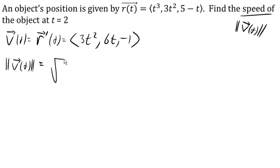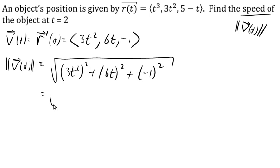Okay, so to find the magnitude of a vector, we do square root of sum of the squares. So 3t squared squared, plus 6t squared, plus negative 1 squared. There we go. 9t to the 4th, plus 36t squared, plus 1.